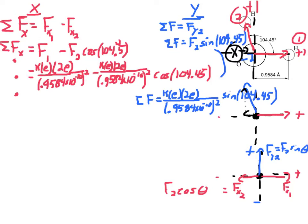The distance between the oxygen and hydrogen for force 2 is the same: 0.9584 angstroms, with the same charges — plus 1 and minus 2 — so the Coulomb's Law part is the same. But here's the difference: this force is at an angle, so I'm getting the x-component using cosine 104.45. The sum of forces in the y-axis uses the same Coulomb's Law expression, but I'm getting the y-component using sine 104.45 — the angle measured from the positive x-axis.